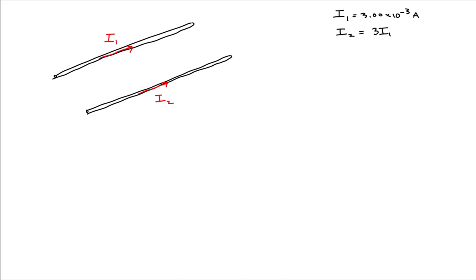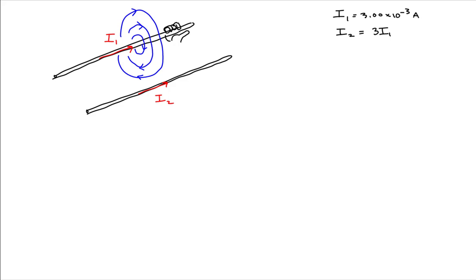If we apply the right-hand rule for each of these wires, we would see that the magnetic field forms concentric circles around the wires. Our right-hand rule gives us the orientation of these magnetic field lines, which are centered around each wire. Since the current in wire 2 is in the same direction as wire 1, the magnetic field lines will have the same clockwise orientation about wire 2.